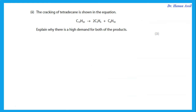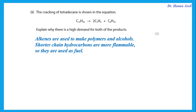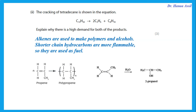The cracking of tetradecane is shown in the equation. Explain why there is a high demand for both products. Cracking gives products with smaller molecules. The products include alkenes, which are used to make polymers or alcohols. The shorter-chain hydrocarbons — for example, breaking C14 to C8 — are more flammable, so they are used as fuel, releasing energy through complete combustion, which gives carbon dioxide plus water.